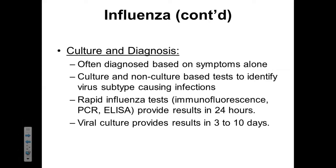Because most cases of influenza resolve themselves and are caused by viruses which can't be treated by antibiotics, there is not a strong motivating factor for a more accurate diagnosis, since we don't have a large repertoire of drugs to administer. We can culture this virus and also use non-culture tests to identify the specific subtype. Rapid influenza tests based on immunological methods give results in 24 hours, and viral cultures give results in about three to ten days. These tests oftentimes are not performed because we typically diagnose based on symptoms alone.